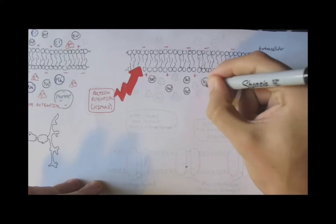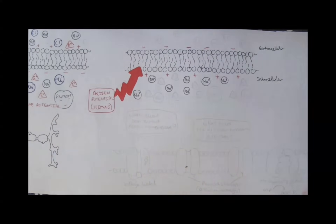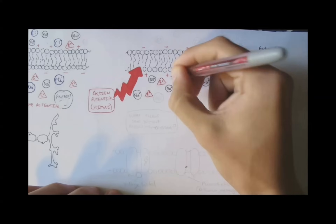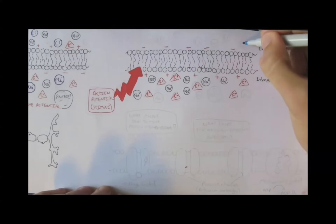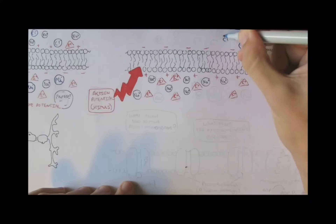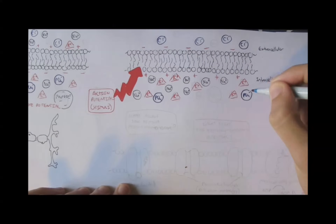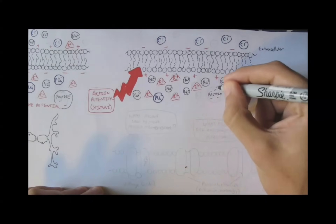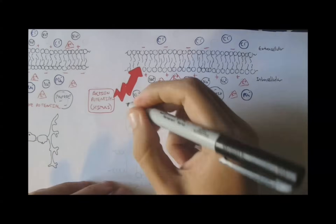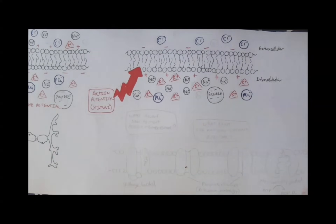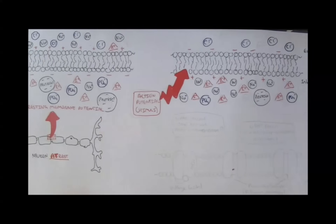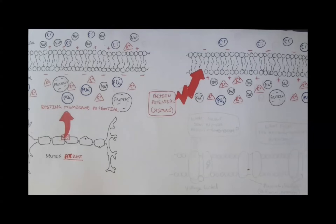This is due to again the distribution of ions. In an excited neuron, there is more sodium on the inside of the cell, and also potassium. The chloride ions stay outside, and the phosphate and proteins stay inside. So you can see the difference in the distribution of these ions between the resting membrane potential and the action potential.